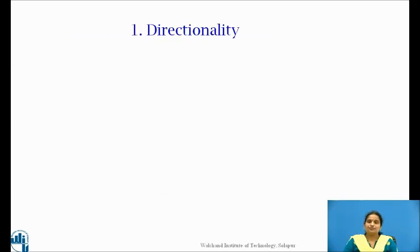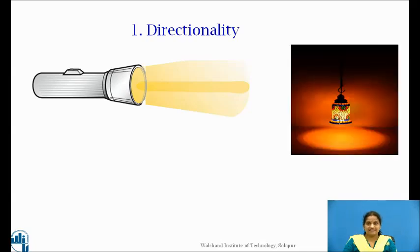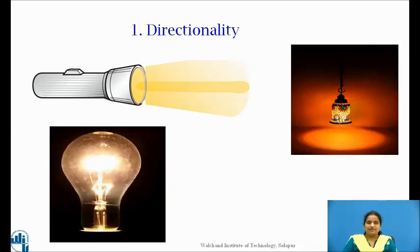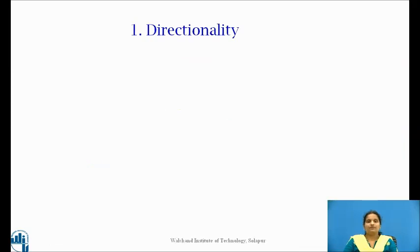The first important property of laser is directionality. When you switch on a torch, the light is emitted in all directions. Similarly, the light from all conventional sources, like the electric bulb, lamp, dispenses in all possible directions. So, this property of light to spread in all directions is called divergence.